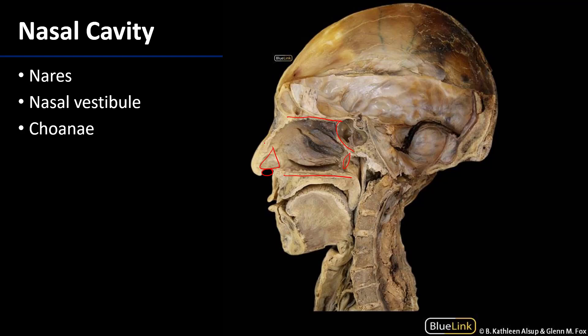The medial wall of the nasal cavity is the nasal septum, which has been removed here in this sagittally sectioned specimen. The lateral wall consists of conchae or nasal turbinates, which provide turbulence to the inspired or inhaled air, bringing as much of this air into contact with the mucosa of the nasal cavity so that it may be warmed, moistened, and can capture any impurities before they enter the respiratory system.